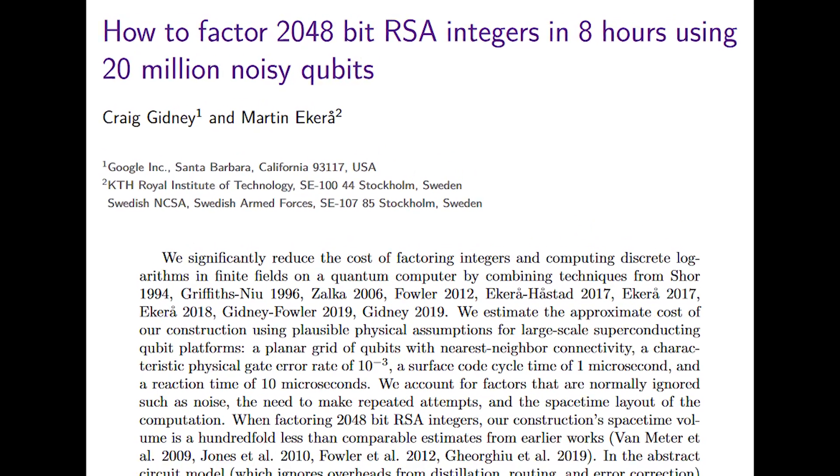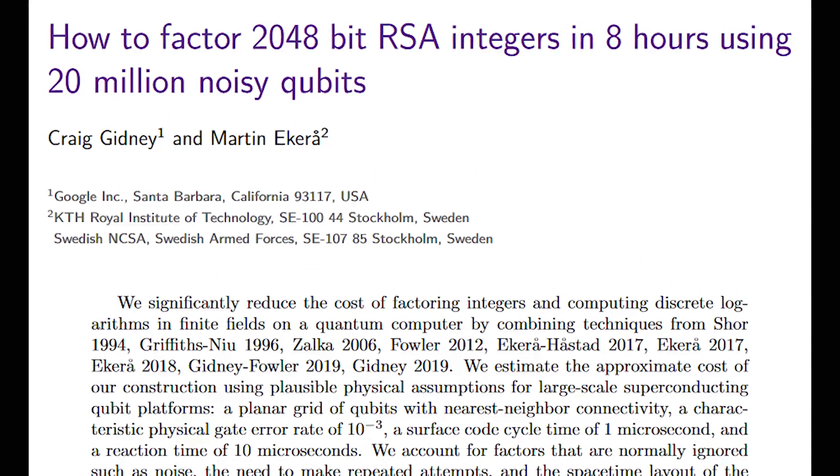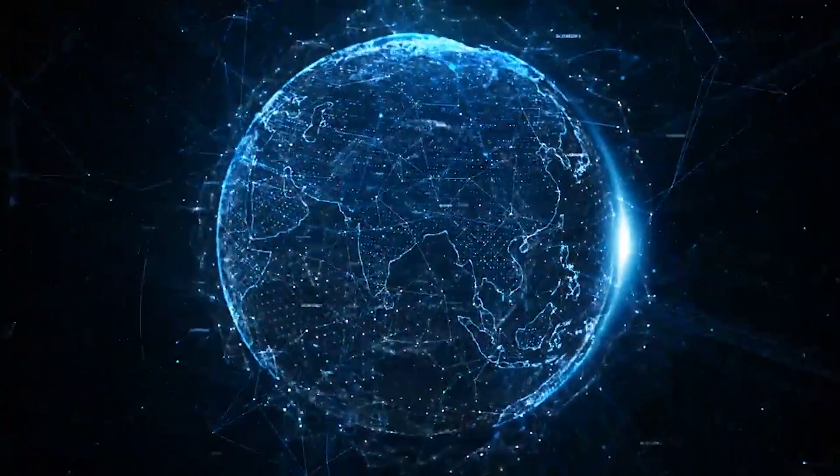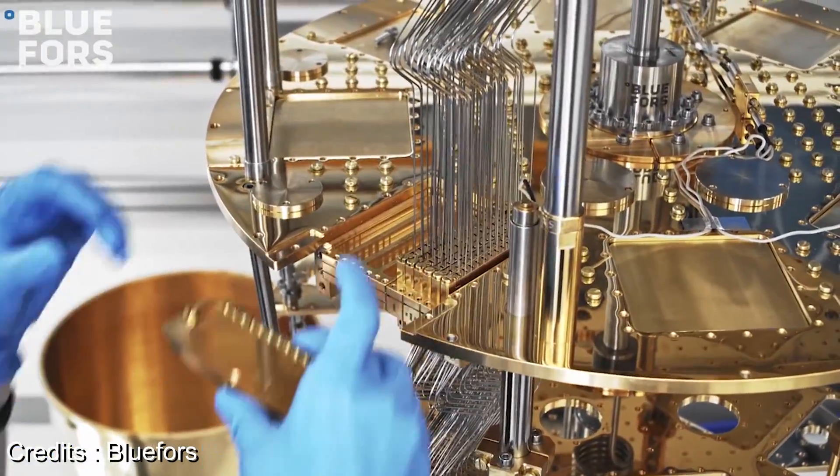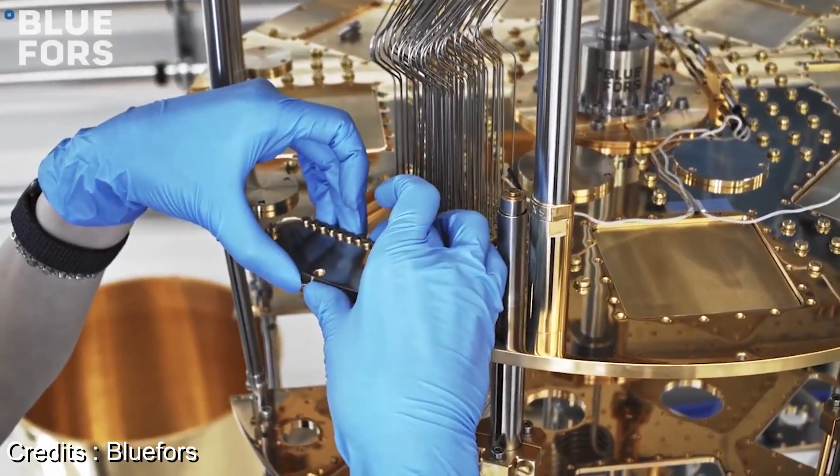Google estimated you would need 20 million qubits to break RSA cryptosystem, the thing that secures all the websites on the internet. And here you face a lot of barriers, but the most obvious one is that to make qubits work.